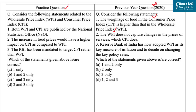Now let's come to the practice question. Consider the following statements related to the Wholesale Price Index and Consumer Price Index. The first statement is: both WPI and CPI are published by the National Statistical Office (NSO). This statement is incorrect, because WPI is published by the Office of the Economic Advisor under the Ministry of Commerce and Industry, while CPI is published by the National Statistical Office.